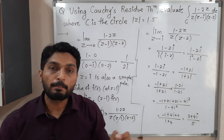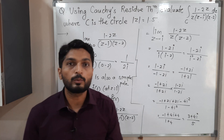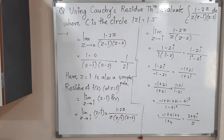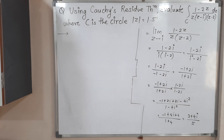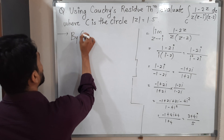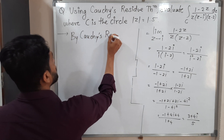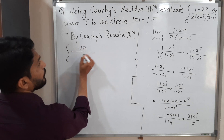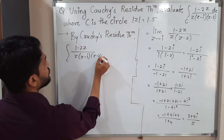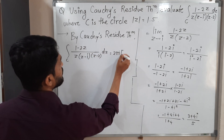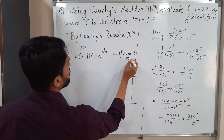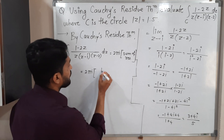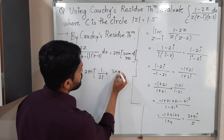z equal to 2 is also a simple pole, but it lies outside circle C, so no need to calculate residue there. Now applying Cauchy's residue theorem: the integral over C of (1 minus 2z) upon z(z minus i)(z minus 2) dz equals 2πi times the sum of residues, which is 2πi times (1 upon 2i plus (3 plus 4i) upon 5).